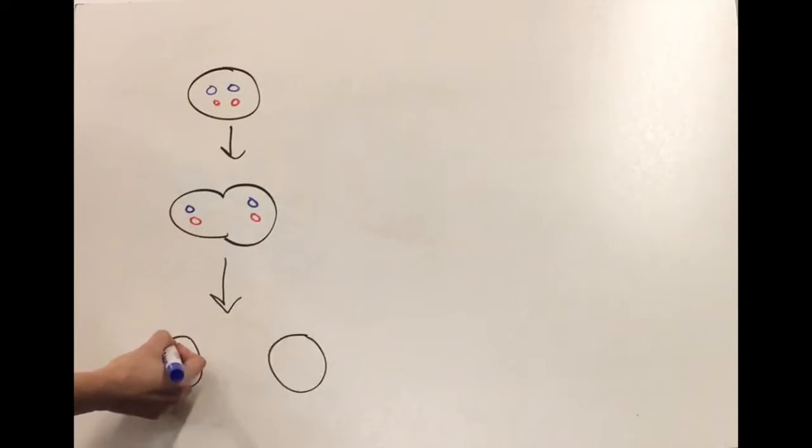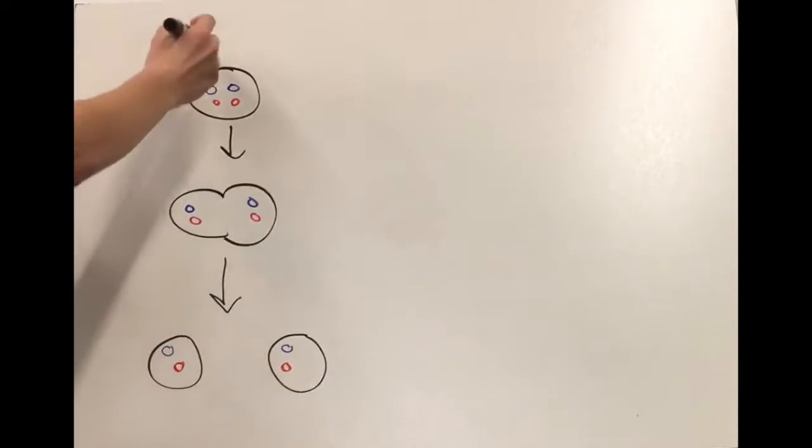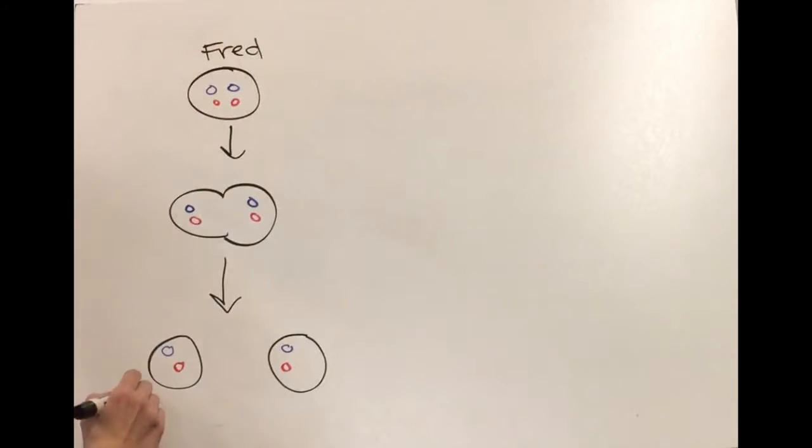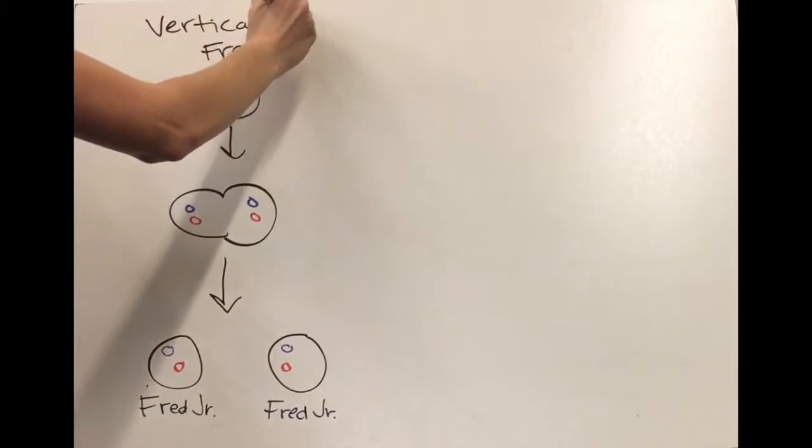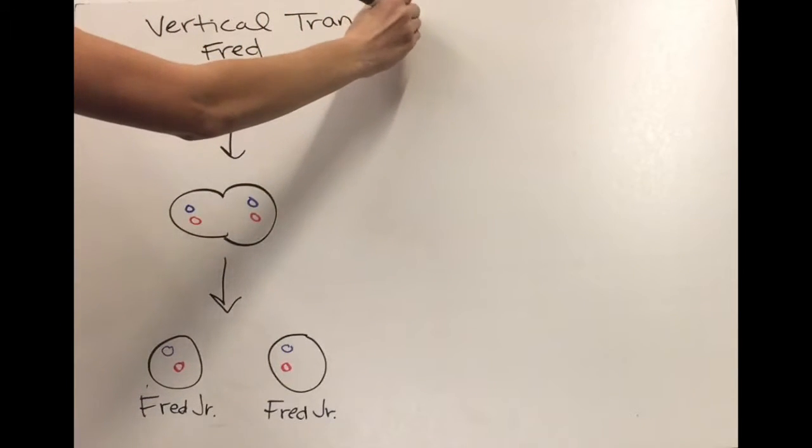Once Fred divides into two new cells, each of the new cells will contain an MCR1 plasmid and also be colistin resistant. This is also true of Steve and Johnny and Rachel and Alexa and George and anyone else that Fred passed resistance to. All of their kids will be colistin resistant too. This process of passing a gene on to future generations is called vertical transmission.